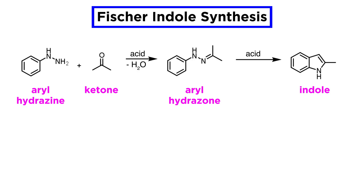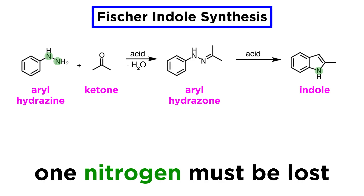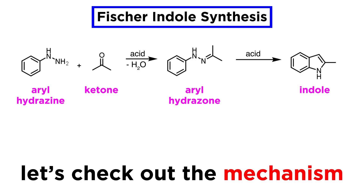We can probably identify the atoms from each of the starting materials in the product, but we will also notice that we start with two nitrogen atoms and we end up with only one, so the mechanism must account for the loss of one nitrogen atom. As it turns out, the mechanism for this second step is quite complex, but let's take a look at it.